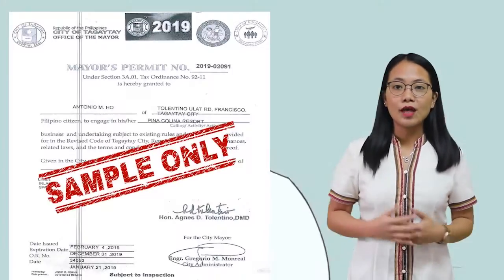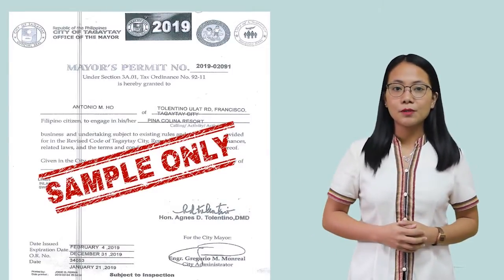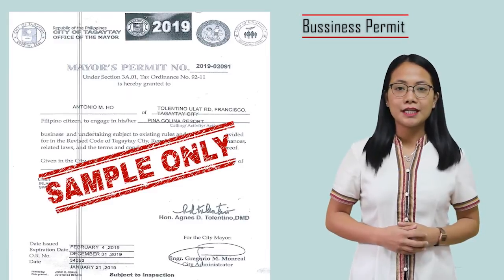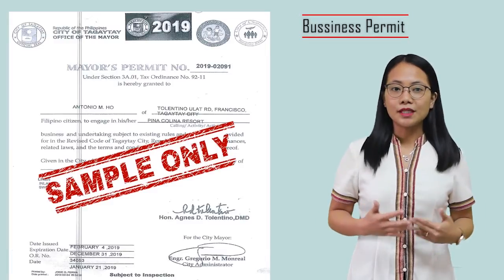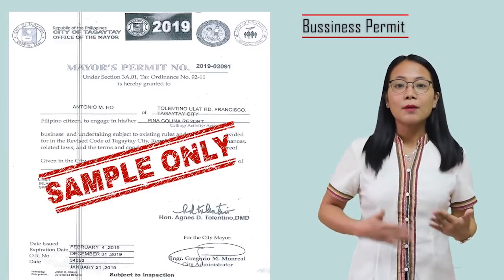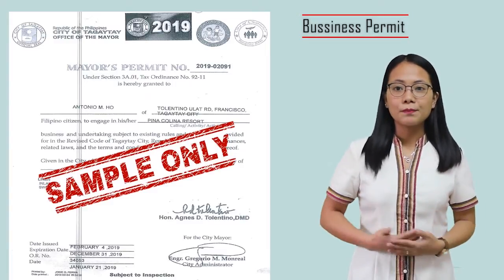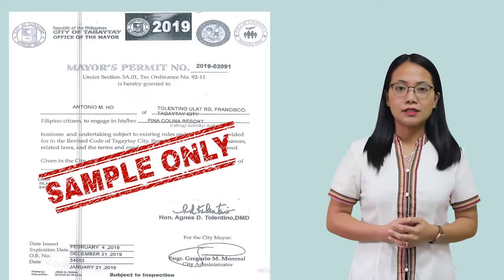Another one is the Business Permit or DPA Registration. This document is provided by the supplier and must be up to date.